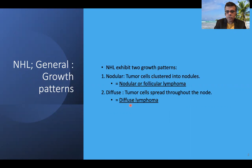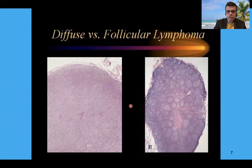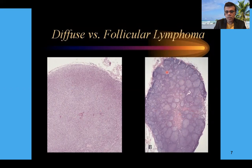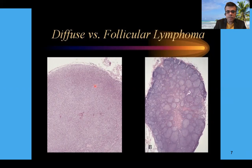NHL generally exhibits two growth patterns morphologically: either multiple nodules, called nodular or follicular lymphomas, or a diffuse form of growth pattern where tumor cells are diffusely scattered with complete obliteration of the follicular architecture. In low power, the diffuse pattern shows complete obliteration of the lymph node architecture with lymphoid follicles not evident, whereas the nodular pattern shows crowding of lymphoid follicles in a back-to-back arrangement.